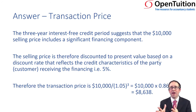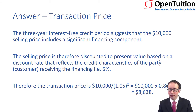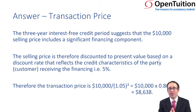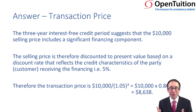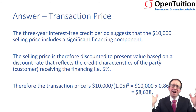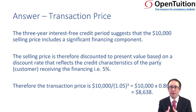Ten thousand divided by 1.05 to the power of three — because it's three years at five percent. That gives a discount factor of 0.8638, and multiplying that discount factor by the ten thousand cash flow gives you a present value of eight thousand six hundred and thirty-eight. So the transaction price for the car is eight thousand six hundred and thirty-eight, and the remaining amount — approximately one thousand three hundred and seventy-two — relates to interest income.